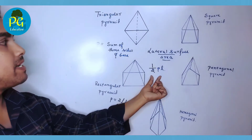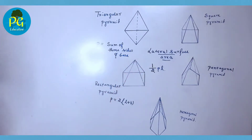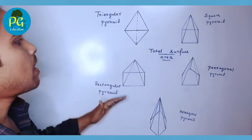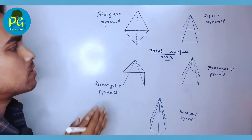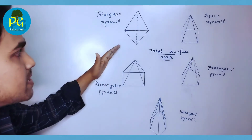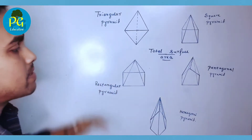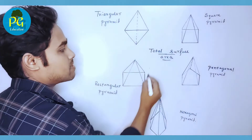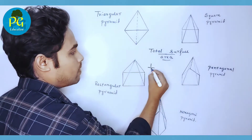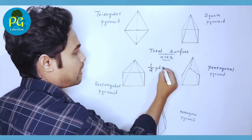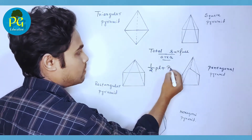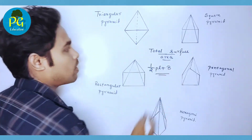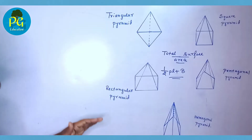By this formula we can find the lateral surface area of a pyramid. The total surface area is the area of the total outer surface, that is lateral surface area plus the base. So total surface area = ½Pl + area of base (B).